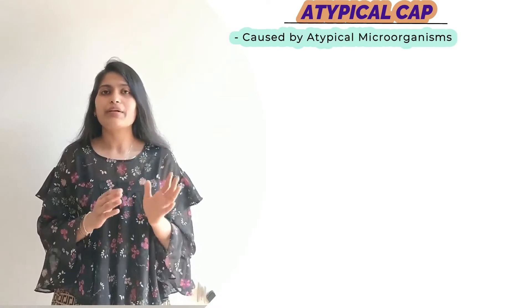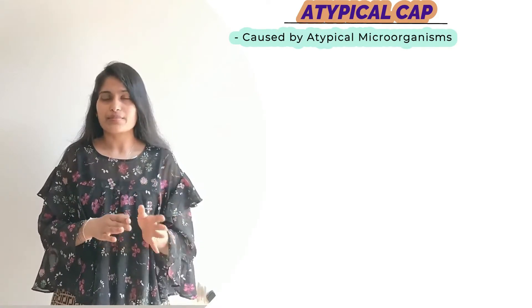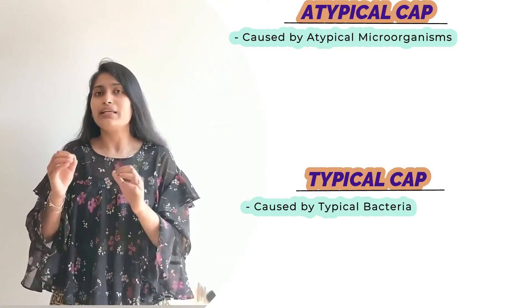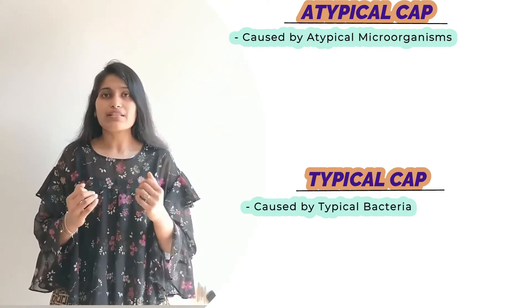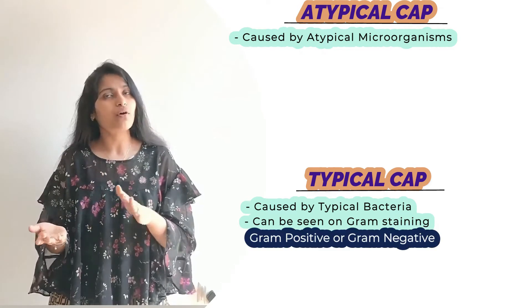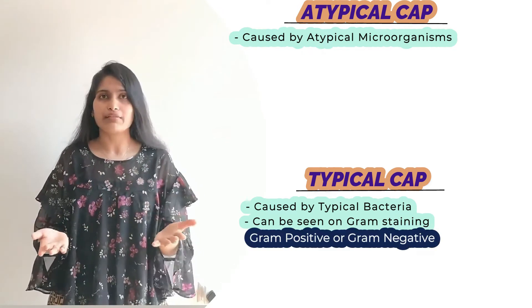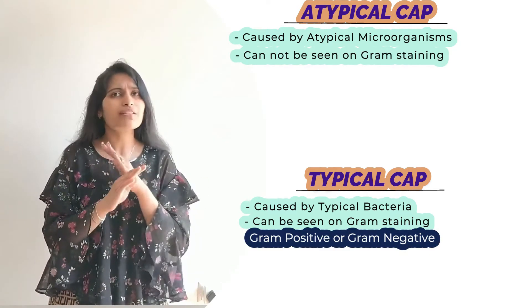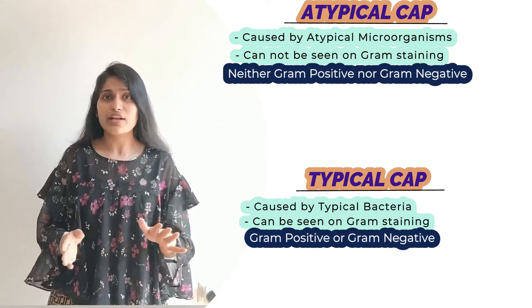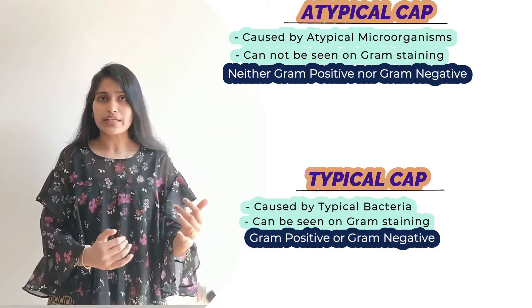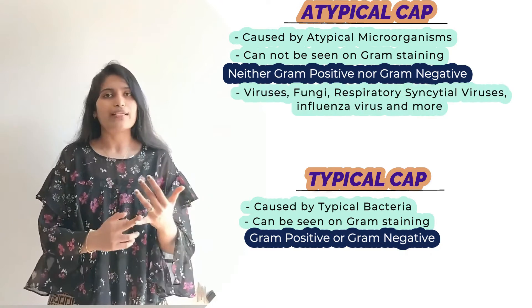Atypical CAP is caused by atypical microorganisms and typical CAP is caused by typical bacteria. Typical bacteria are those which can be seen on gram staining — they are either gram positive or gram negative. Atypical microorganisms are those which cannot be seen on gram staining — they are neither gram positive nor gram negative. This group also includes viruses and fungi.